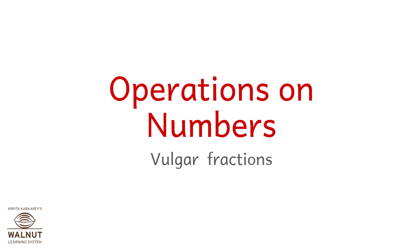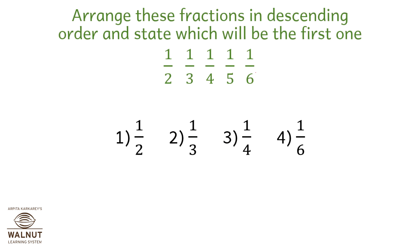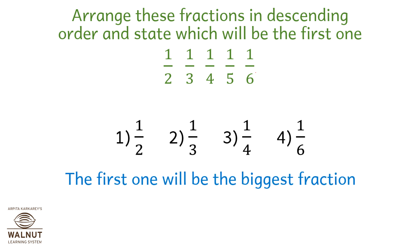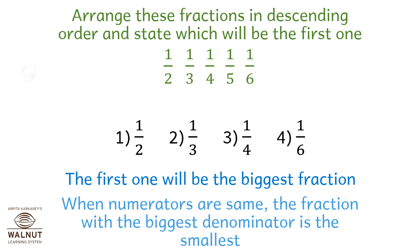Operations on Numbers: Vulgar Fractions. Arrange these fractions in descending order and state which will be the first one: 1/2, 1/3, 1/4, 1/5, 1/6. The first one will be the biggest fraction. When the numerators are the same, the fraction with the biggest denominator is the smallest.